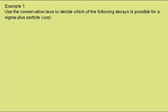Now let's look at an example such as you may get in an exam. Use the conservation laws to decide which of the following decays is possible for a sigma plus particle, given that the quark composition of a sigma plus is up, up, strange. In a question you will be given the quark composition of any particle other than the proton, neutron, antiproton, antineutron, the pions and the kaons. The properties of the individual quarks are given on the datasheet.